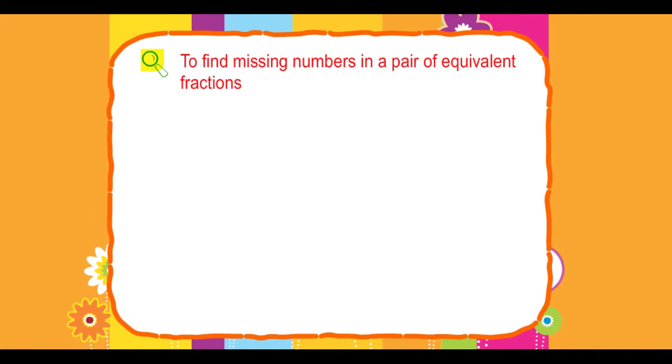To find missing numbers in a pair of equivalent fractions. Method 1: By cross multiplication.